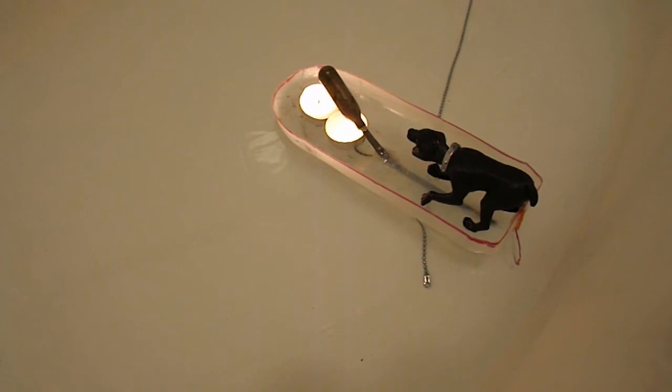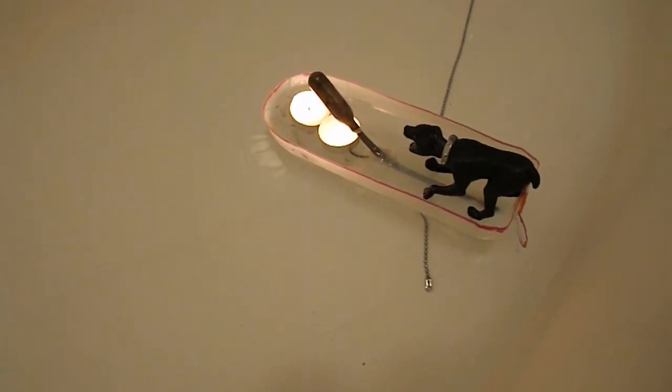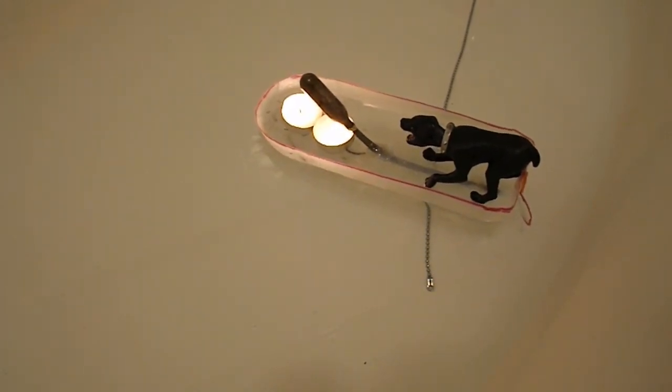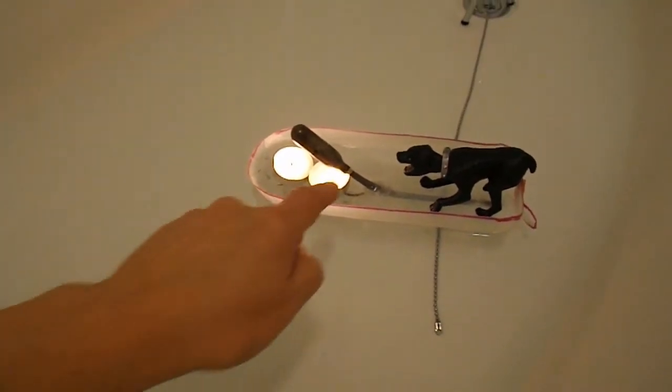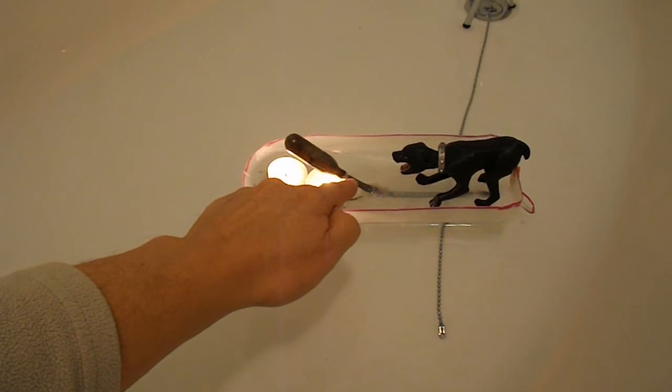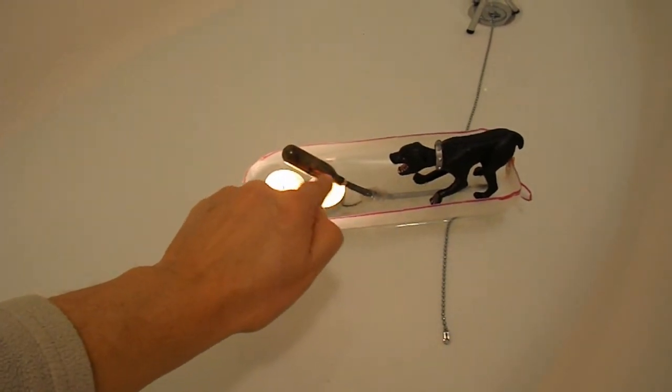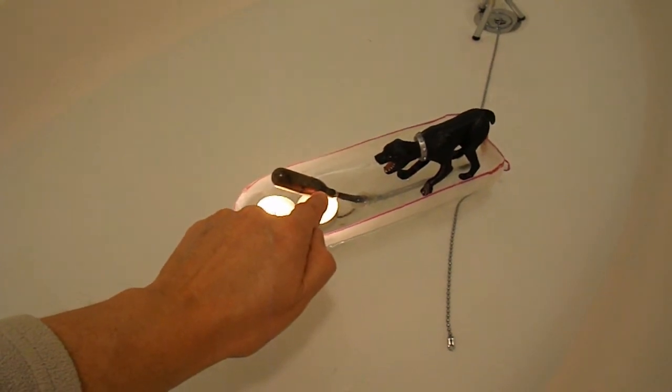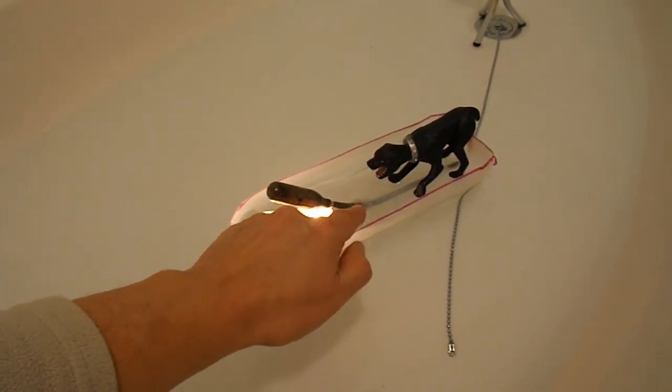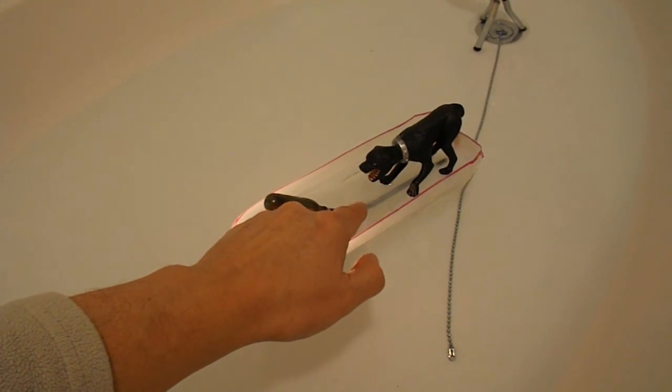We've now got version 2. Version 1 failed because the plastic drinking straw actually melted where it went through the, whatever we call this thing, the boiler. So I've replaced it with a steel pipe.